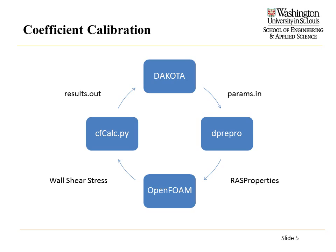Then we run OpenFOAM. OpenFOAM generates the wall shear stress, and I have a Python script that converts wall shear stress into the skin friction coefficient and pushes that into a results-out file, which DAKOTA looks for, reads in, and then the process continues.